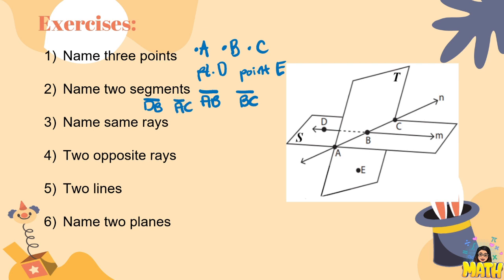Next, name the same rays. Kapag sinabi natin the same ray, it must use the ray symbol and it must have the same end point. So we can have ray AB and ray AC. AB is going to this direction and AC is also on the same direction.